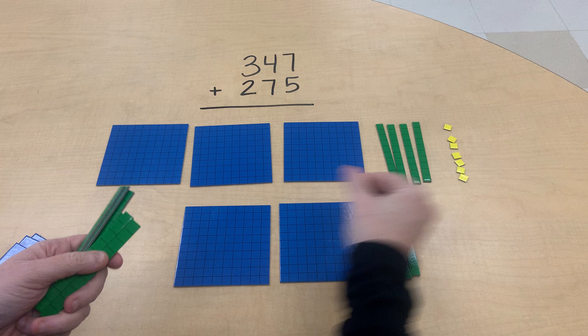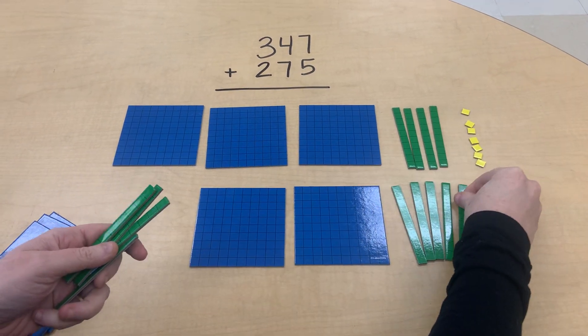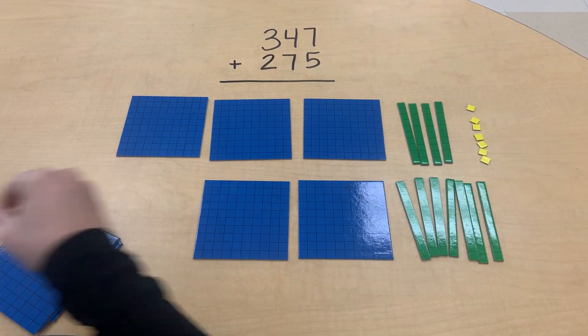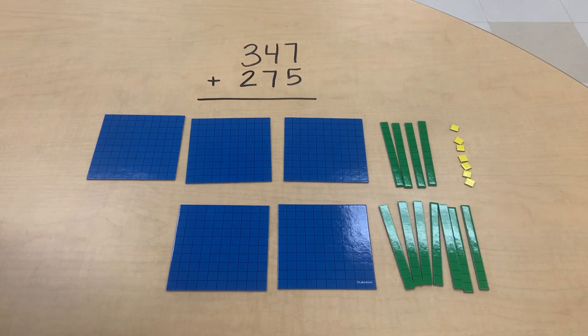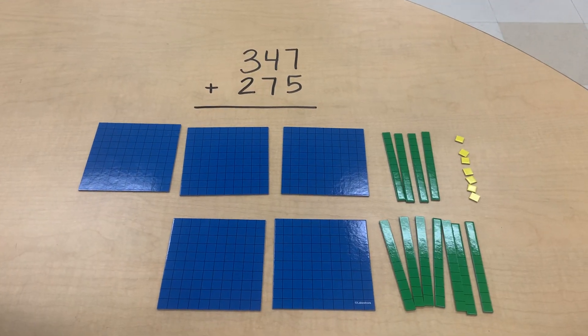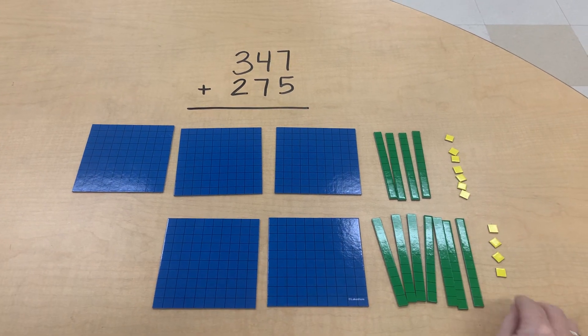One, two, three, four, five, six, seven, and five ones. One, two, three, four, five.